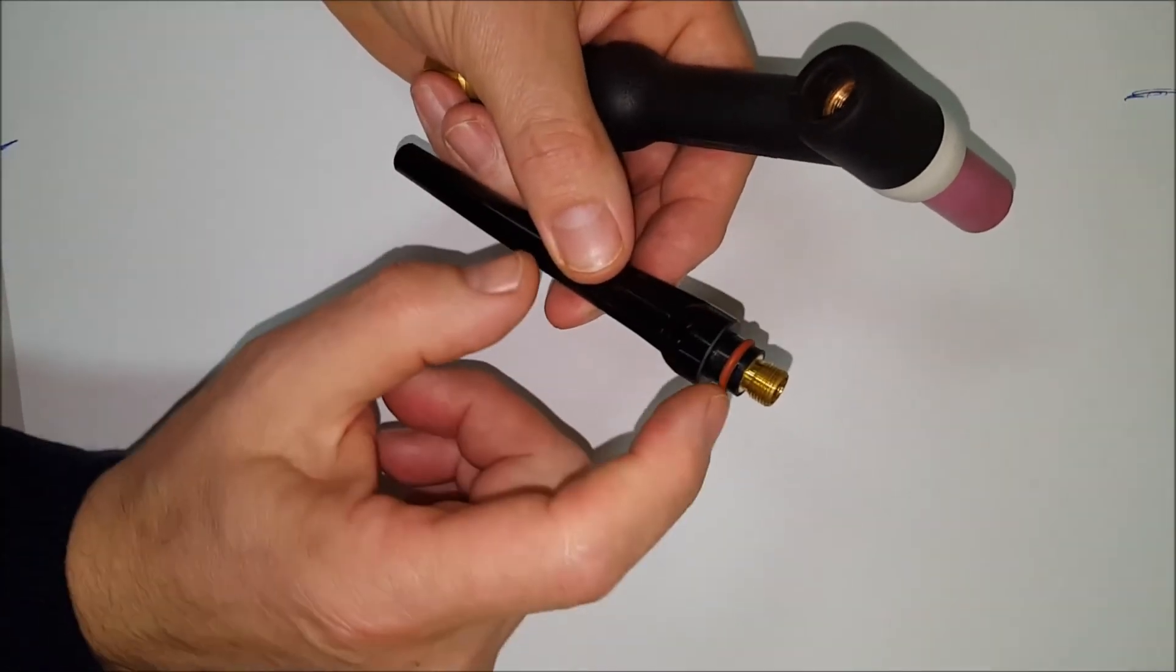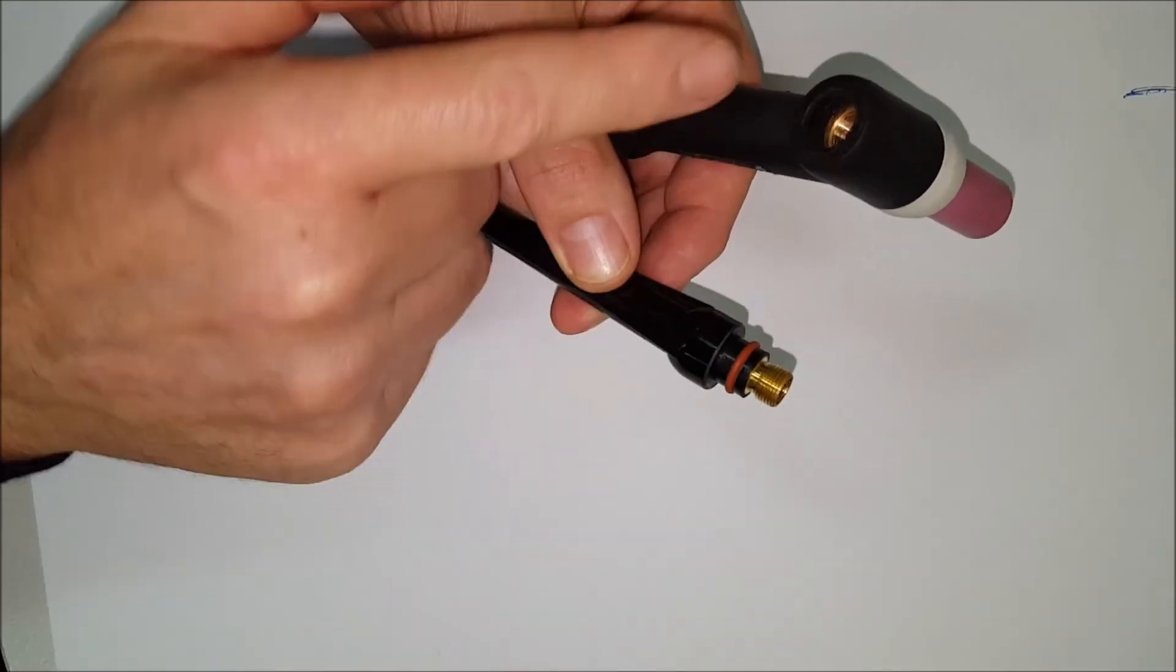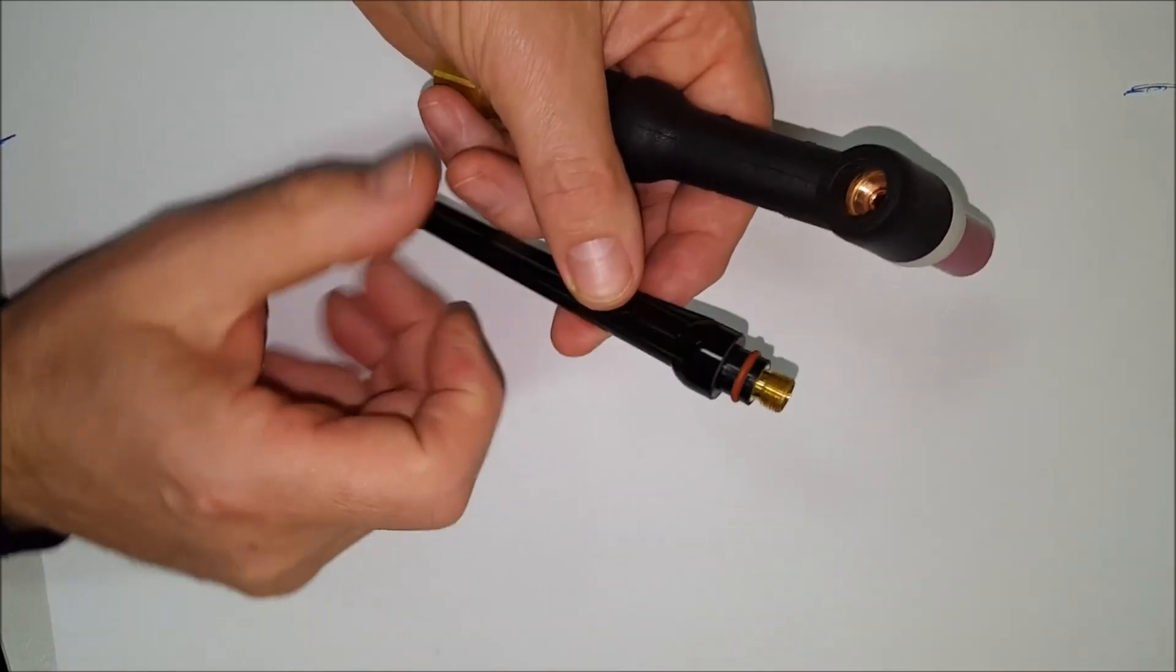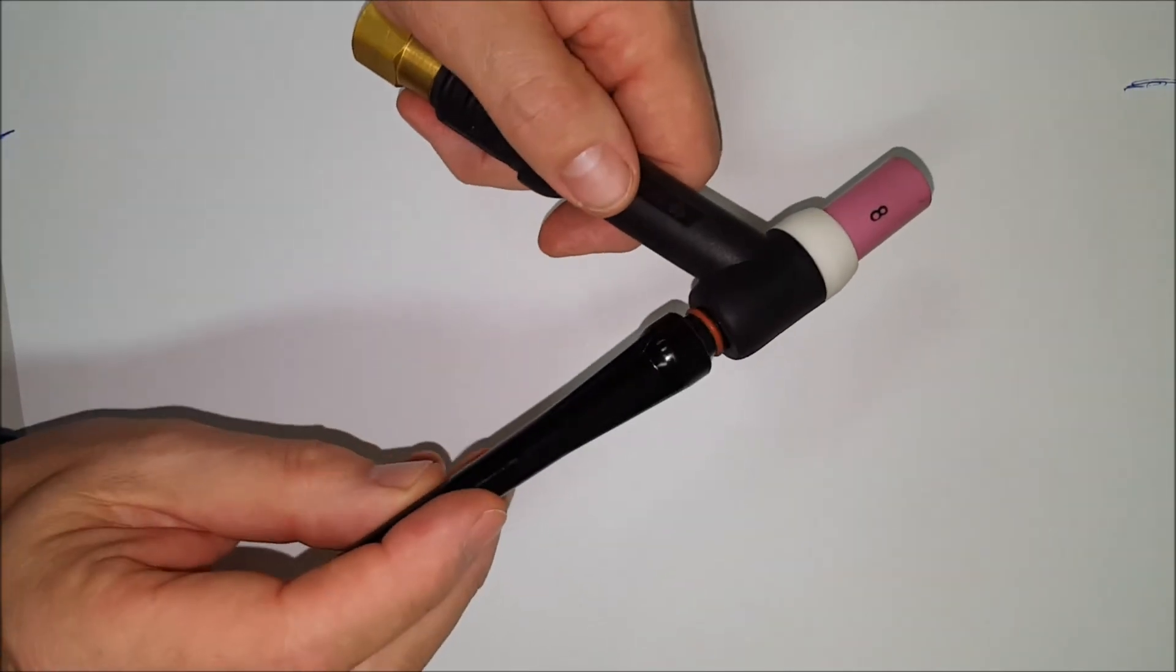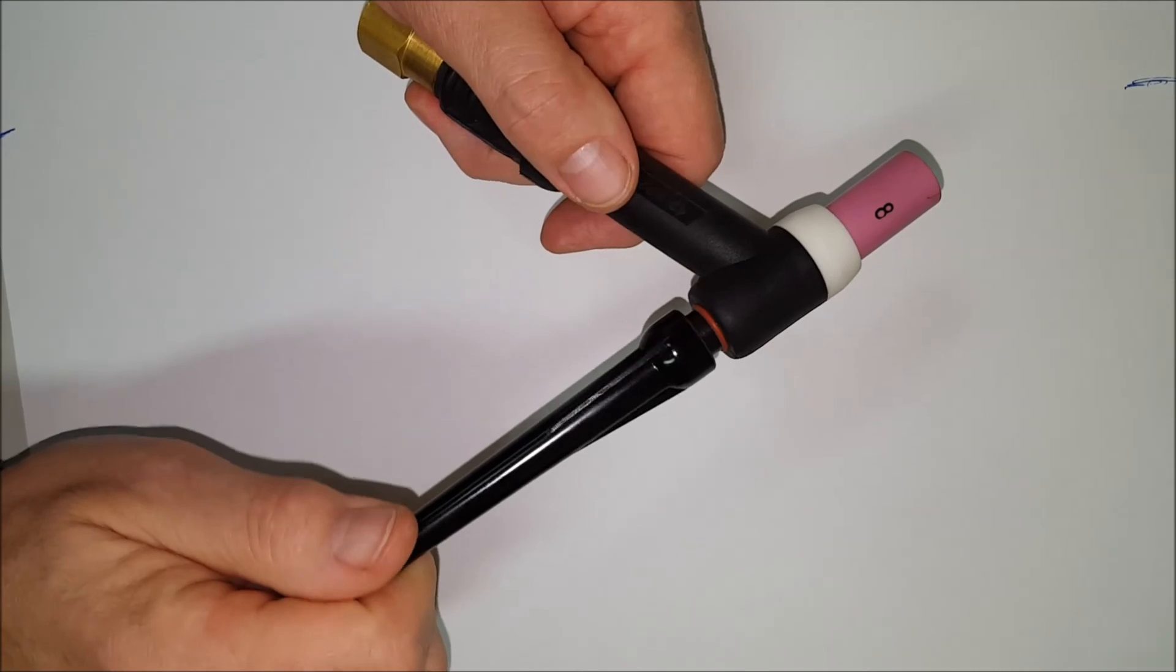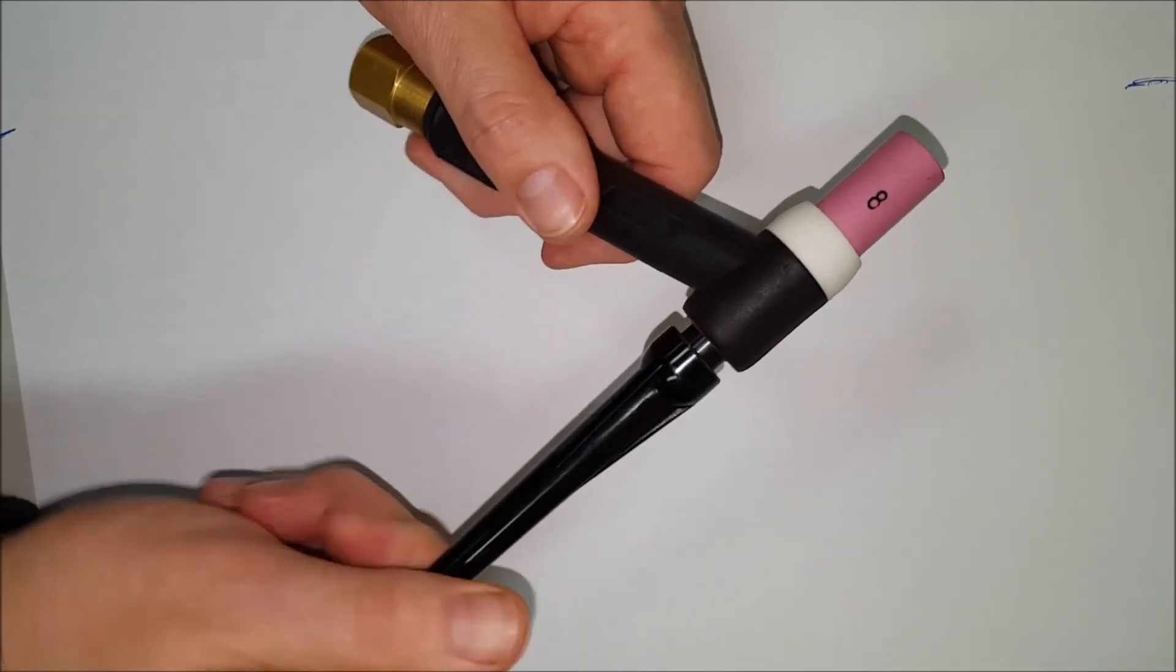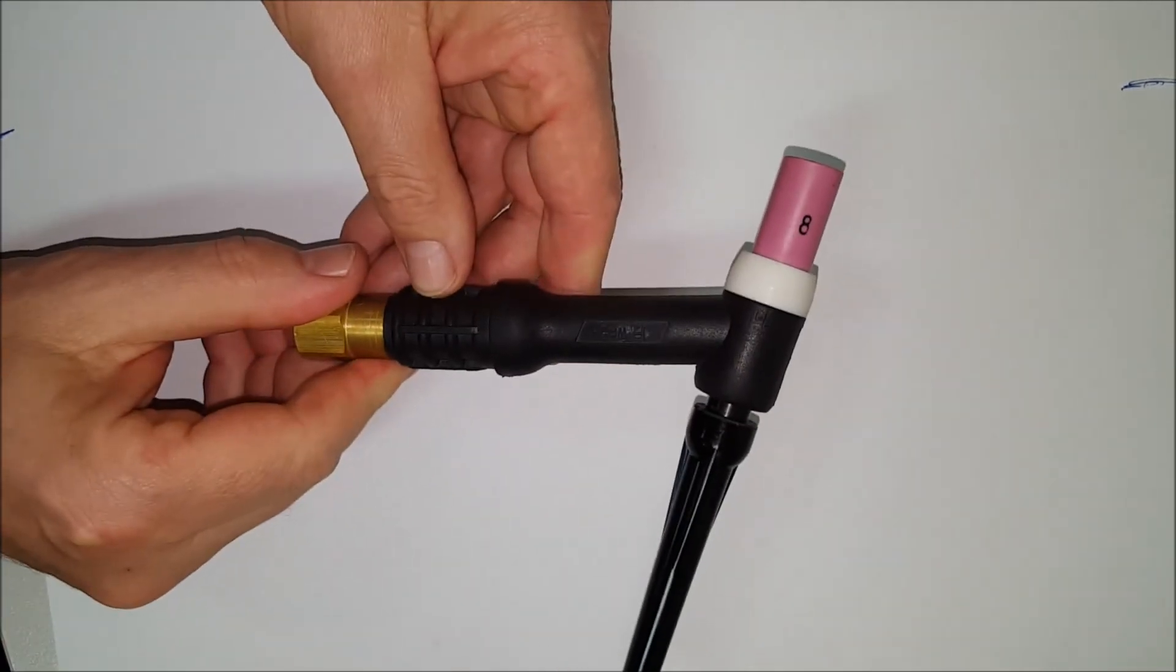Always check that the o-ring is on the back cap because this is going to give you a gas tight seal in the back of the torch and prevent you drawing any oxygen in behind the weld pool. So again, we screw that in. So there we have it, that's your basic torch setup.